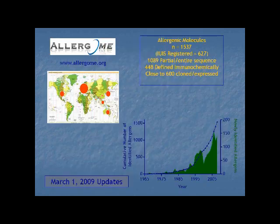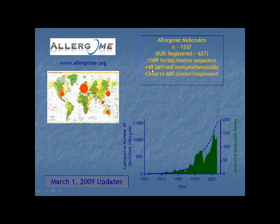In 2009, we had entire sequences of over 1,000 different allergens — immunochemically defined — and we've cloned over 600, a number probably closer to 1,000 now. We've cloned them, we know what they look like, we know their structures. This has generated a relationship between genomics, proteomics, and bioinformatics, which is where most of the information comes from today.